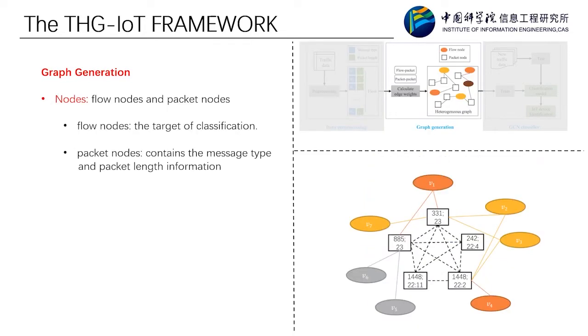Graph generation. We build a large THG as shown in the figure, which contains two kinds of nodes and two kinds of edges. We set both the flows and packets as nodes in THG, which are termed as flow nodes and packet nodes. In the figure, the ellipse is the flow node, and the rectangle is packet node. And different colors represent different classes. We scan all the flows to get all the nodes of THG. The total number of nodes of THG is the total number of flows plus the number of different packets. Each packet node contains the message type and packet information. And the flow node is the target of classification.